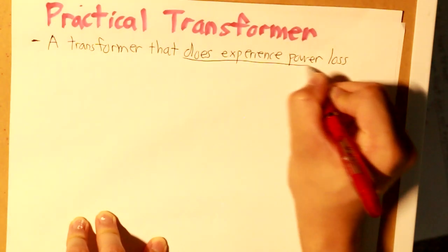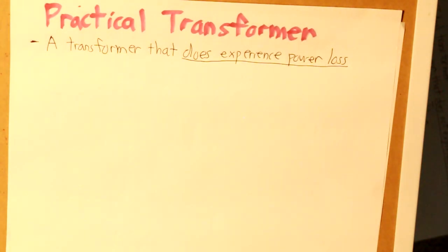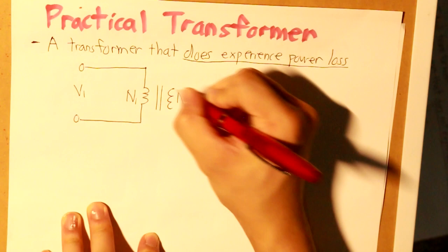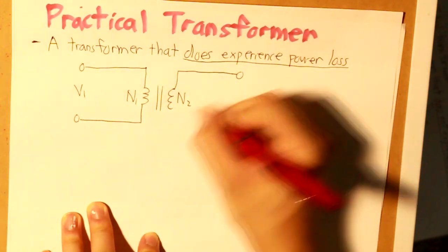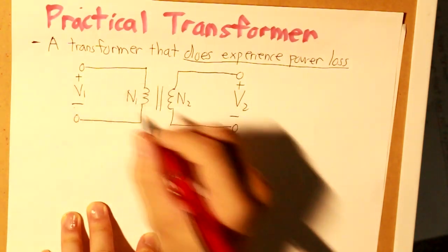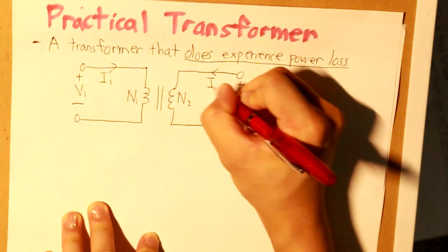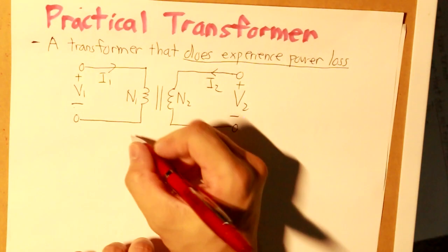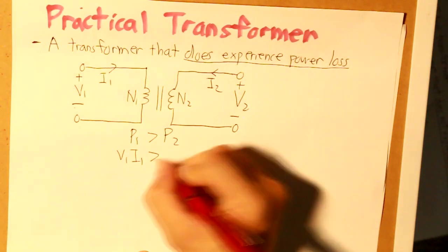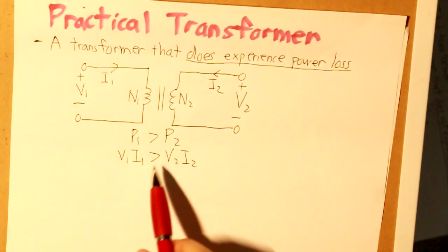I'm going to highlight the importance of what a practical transformer is. So now, let's draw our circuit again. Since it does experience power loss, P1 will be greater than P2. And we have to write down our equations again. Now, P1 has to be greater than P2.